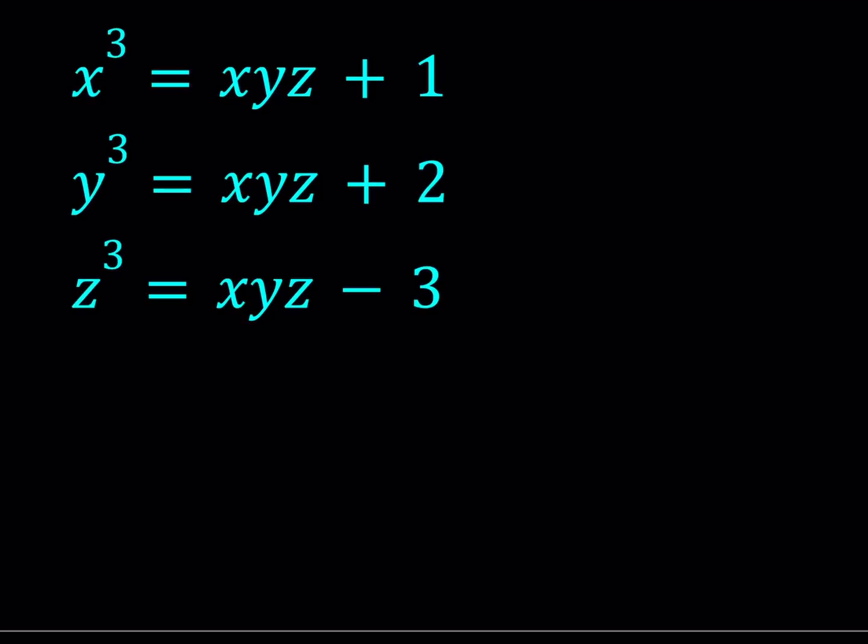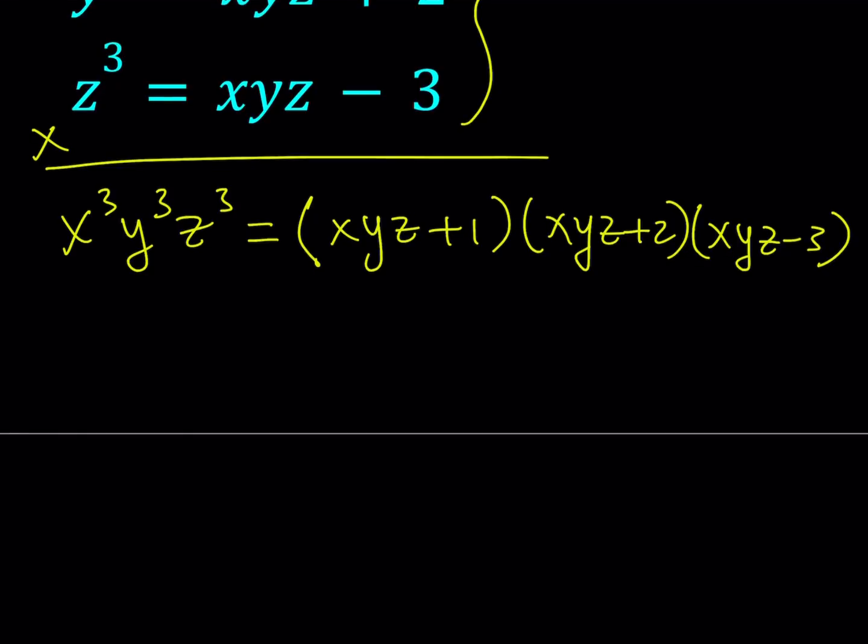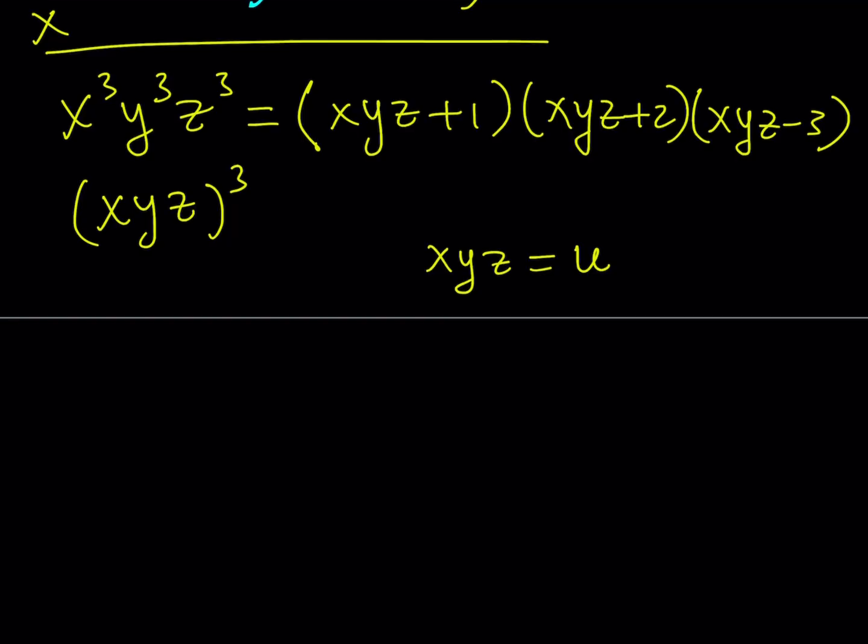Here's the approach we're going to use, and it's kind of fun because it's a little non-standard. The method involves multiplying these three equations. Let me tell you why. If you multiply on the left-hand side, you get x cubed, y cubed, z cubed. On the right-hand side, we get xyz plus 1 times xyz plus 2 times xyz minus 3. Since x cubed, y cubed, z cubed can be written as xyz to the third power, we can use substitution. Let's set xyz equal to u.